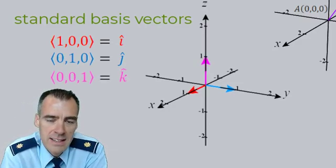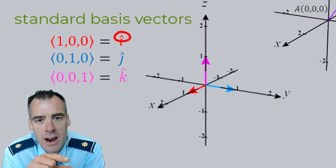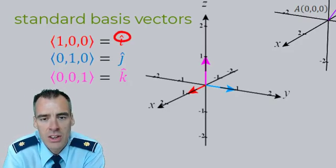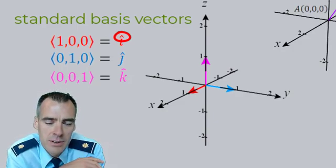And you notice that instead of that vector accent, we've got a hat on it, and what that hat represents is this i, j, and k are the unit standard basis vectors. They're unit vectors, meaning that they have a magnitude of 1.